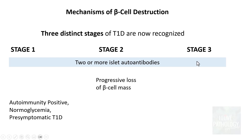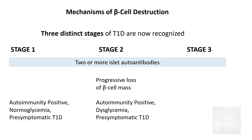In stage 2, there is progressive loss of beta cell mass because of these antibodies. Autoimmunity is positive, there will be dysglycemia — that is, impaired glucose tolerance — but of course no symptoms. So two key findings: autoimmunity positive and dysglycemia. This stage is still referred to as pre-symptomatic type 1 diabetes mellitus, with only impairment of glucose tolerance.